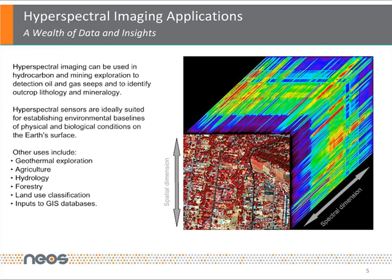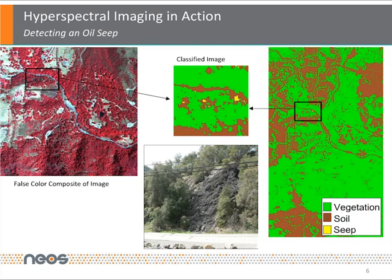Shown here is an example of hyperspectral imaging in action. Flying over an area with our hyperspectral sensors, NEOS can detect oil seeps on the earth's surface. These seeps are shown as yellow on the image to the right. Here are two images of the same area but in different portions of the spectrum: visible and near-infrared on the left, thermal infrared on the right.